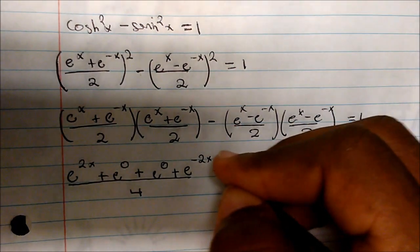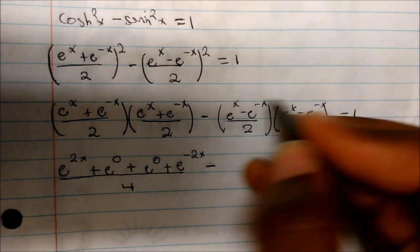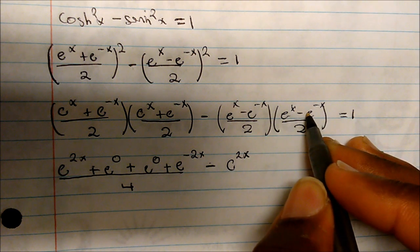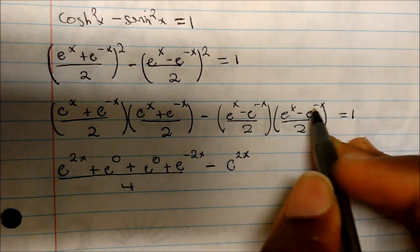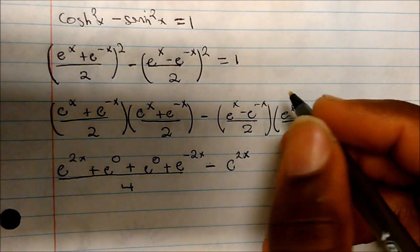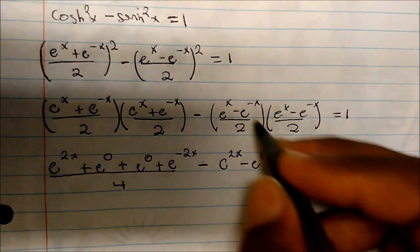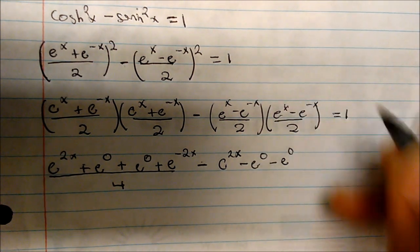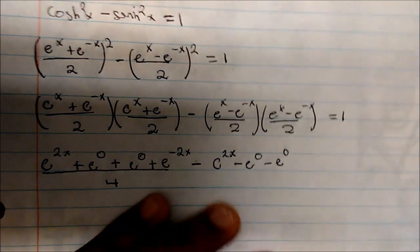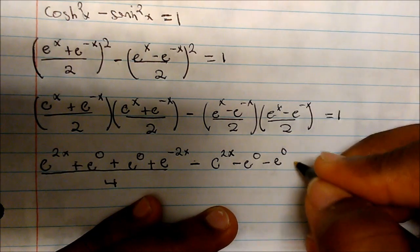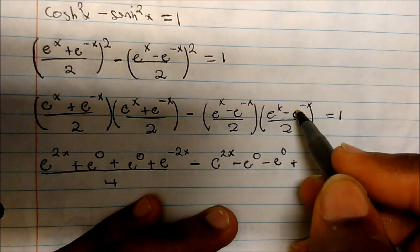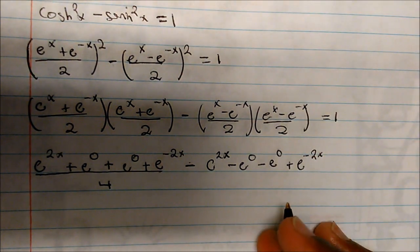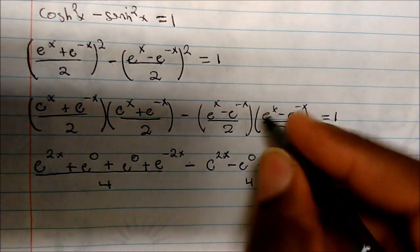We subtract from that: e to the x times e to the x gives e to the 2x. Then e to the x times negative e to the negative x gives negative e to the 0. And negative e to the negative x times e to the x gives minus e to the 0. Then negative times negative gives a positive, so e to the negative x times e to the negative x becomes positive e to the negative 2x. Divide all of this by 4.